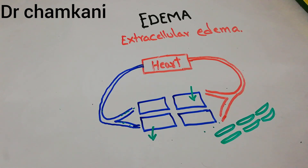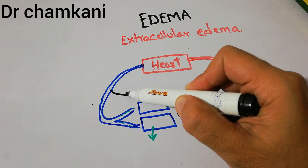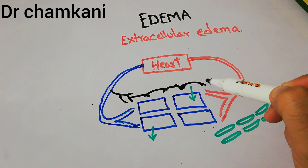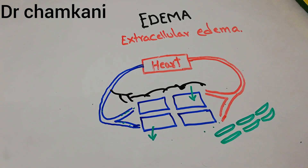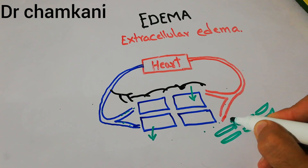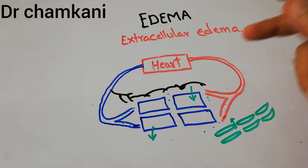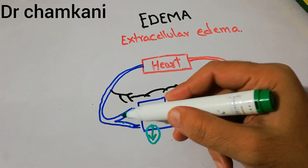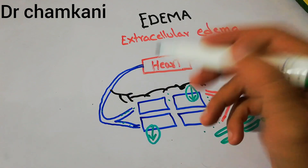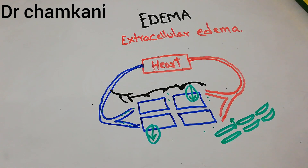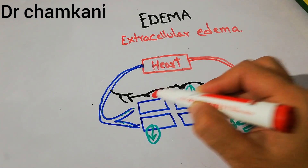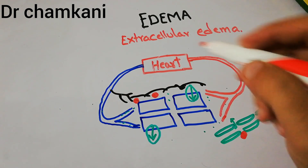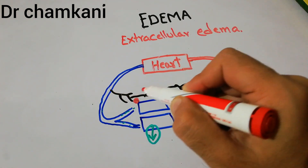Along with capillaries there are other vessels known as lymphatic vessels. Fluid oozes out of the small spaces between the cells of the capillaries into the interstitium. Some large particles — for example proteins or fats — cannot enter the capillaries, so they are conducted through the special lymphatic vessels.